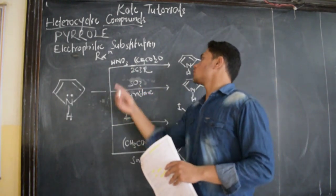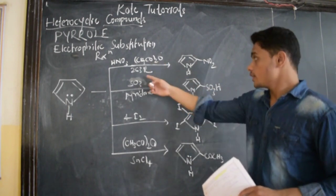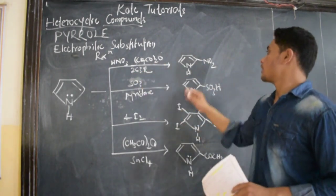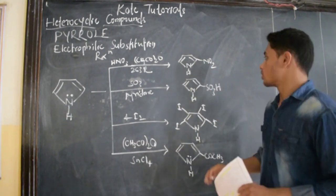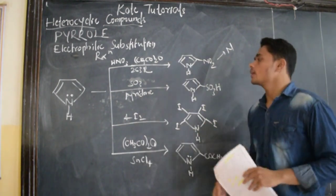Nitric acid HNO3 in presence of CH3CO2O at 263 Kelvin gives us 2-nitropyrrole. That is nothing but nitration - 2-nitropyrrole will be our product.